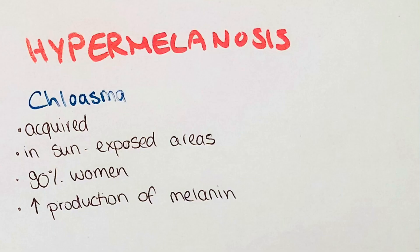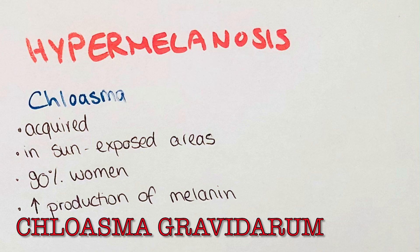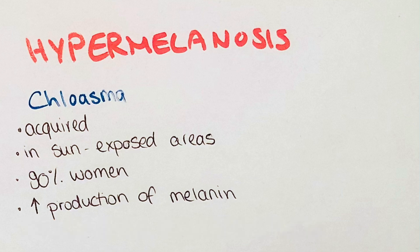Hypermelanotic disorders are quite the contrary to hypomelanotic disorders. Here patients experience a change to a darker skin color in the affected areas. Chloasma is an example of hypermelanosis. It is a benign hyperpigmentation of the skin which usually affects patients with a darker natural skin. Women are much more frequently affected — around 90% of patients are women. Some women experience a temporary form of chloasma during pregnancy which will disappear after the pregnancy is over, while other forms only rarely disappear.